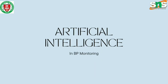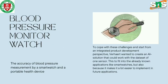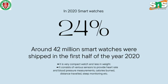Let's look at artificial intelligence in BP monitoring. Regarding blood pressure monitoring watches, the accuracy of blood pressure measurement by a smartwatch is a probable health solution. Verhart wanted to create an AI solution that could work with the data set of one sensor, to fit into already known applications like smartwatches and make it easier to implement in future applications. In 2020, around 42 million smartwatches — approximately 24% — were shipped in the first half of the year. Smartwatches are very compact and lightweight, consisting of various sensors to provide heartbeat rate, blood pressure measurements, calories burned, distance travelled, and speed monitoring. Thank you for listening.